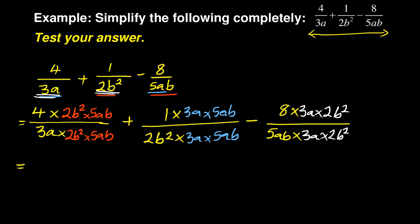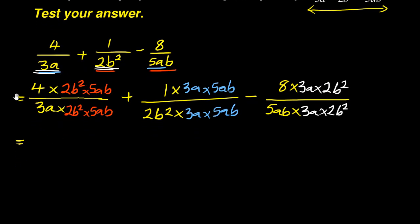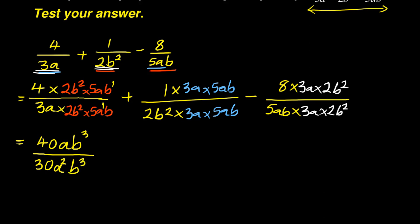I need to multiply the top and multiply the bottom. The numbers multiply each other. For example, 4 times 2 times 5 — 4 times 2 is 8, 8 times 5 gives me 40. And then b squared times b — there is b to the power of 1, so there are three of them — and then a is 1. Following alphabetical order, it will be ab to the power of 3, all over. Now 3 times 2 is 6, and 6 times 5 gives me 30. Then a times a gives me a squared, and b squared times b gives me b to the power of 3.